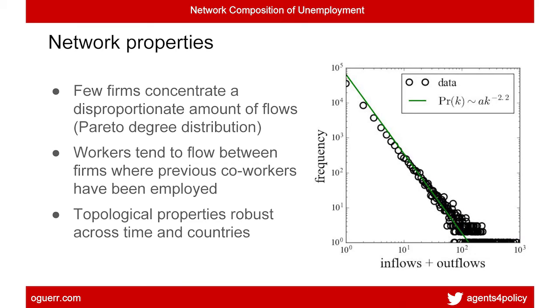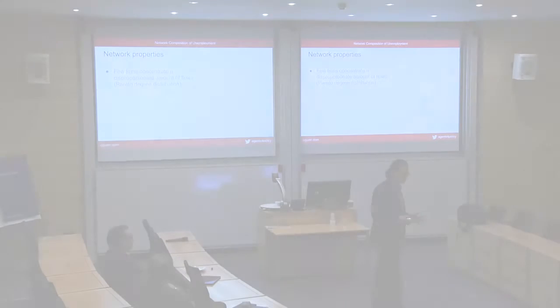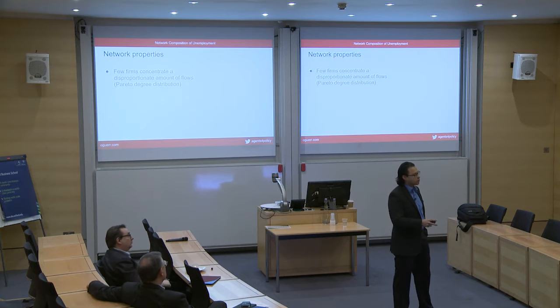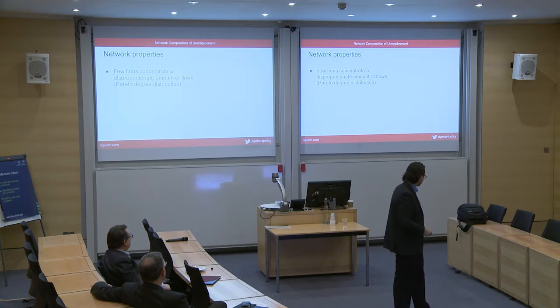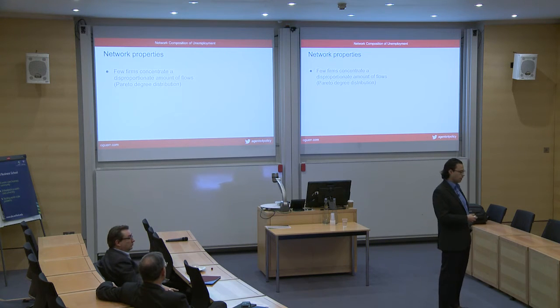This is the labor flow network for Finland — one year of flows, showing all companies in the Finnish economy. The size of the nodes represents the number of people they receive and let go. The layout clusters companies that share a lot of labor flows, revealing structure in the economy: clusters where workers tend to move a lot, and in the periphery, small companies with little to do with labor reallocation — probably single-worker enterprises disconnected from the core. Among our findings, a few firms concentrate a disproportionate amount of labor flows. The distribution of connections is far from normal — it actually follows a Pareto distribution. There also seems to be persistence or reinforcement of links observed in the network.